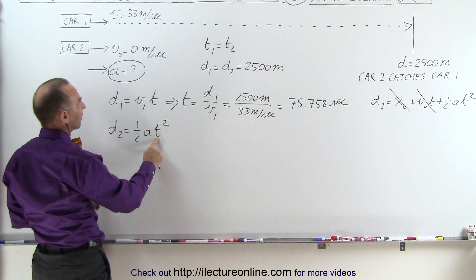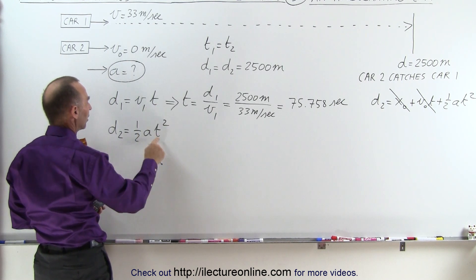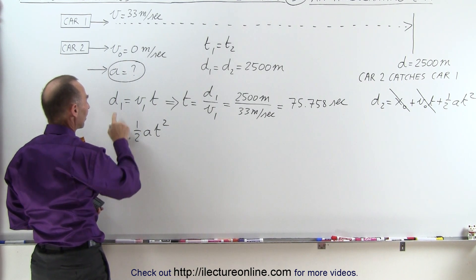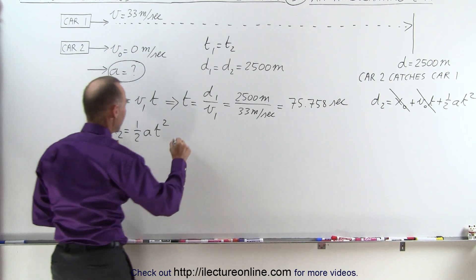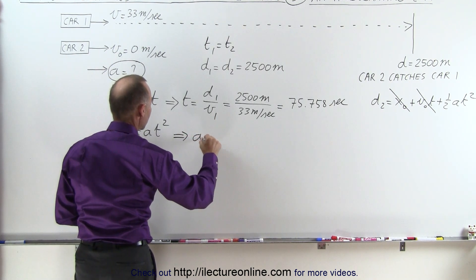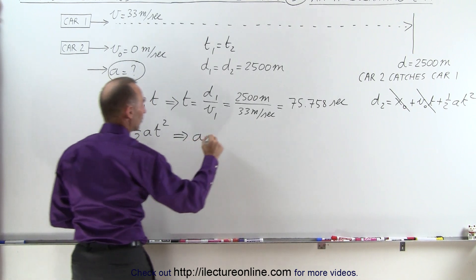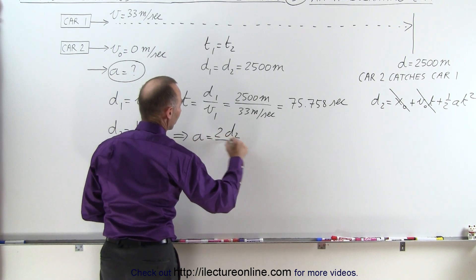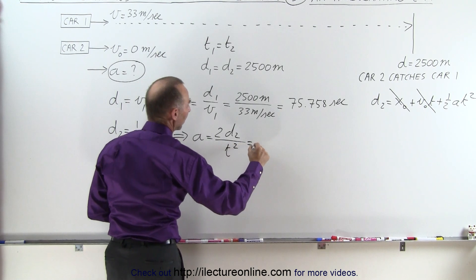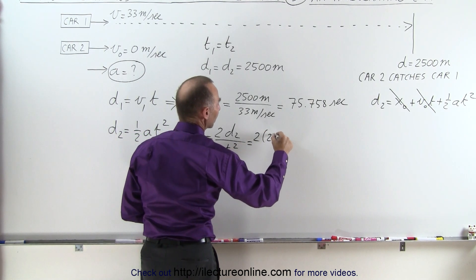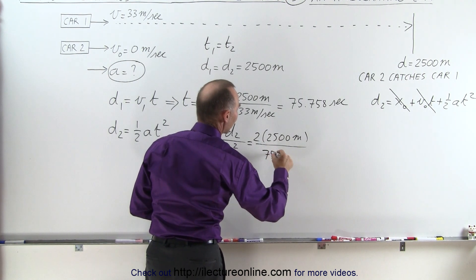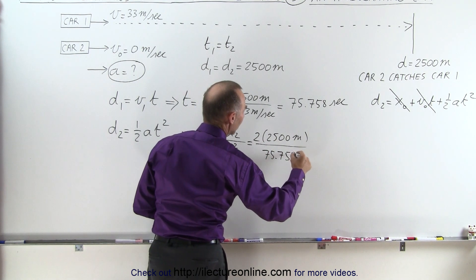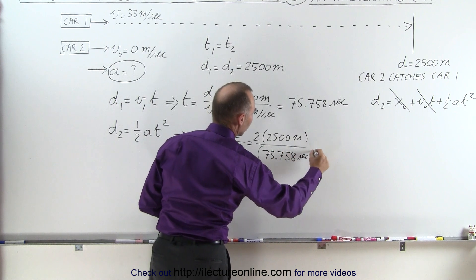Now we know what the time is because it's the same for the first car, and we know the distance because that's the same as the first car, so we could solve this equation for a. So that means that a is going to be equal to 2 times the distance divided by the time squared. In this case, that's 2 times 2500 meters divided by 75.758 seconds, and we have to square that.